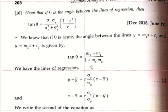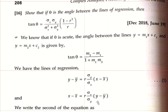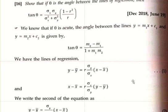We have the lines of regression: y minus y-bar equals r into sigma y divided by sigma x, into x minus x-bar. Take this as equation 1. And x minus x-bar equals r into sigma x divided by sigma y, into y minus y-bar.